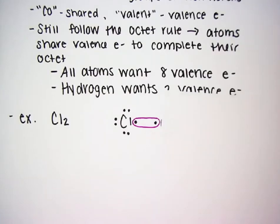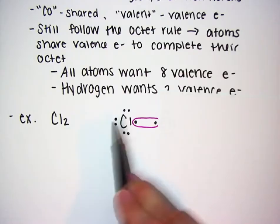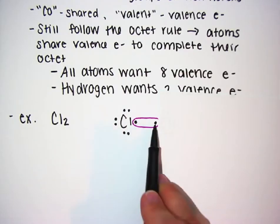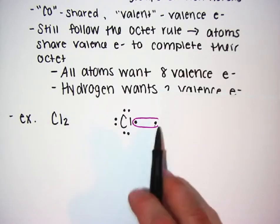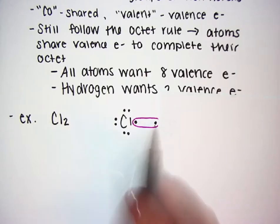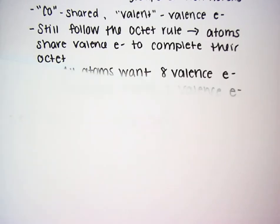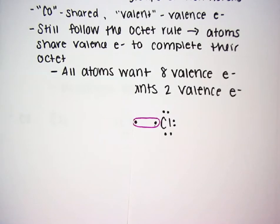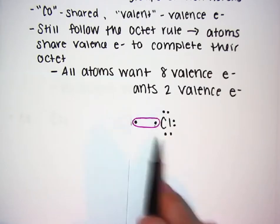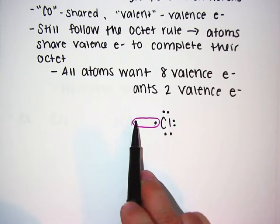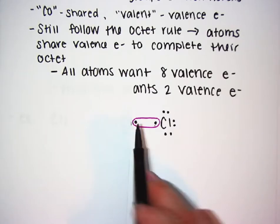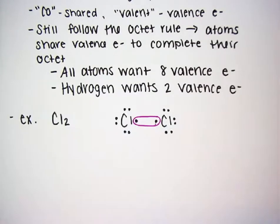By sharing those electrons, each chlorine has completed its octet. If I look at this chlorine, it has two, four, six, seven, eight electrons — seven of its own plus the one that it shared. Same thing with the other chlorine: it now completes its octet with seven of its own valence electrons plus the one that it shared. So by sharing that pair of electrons, chlorine completes its octet.